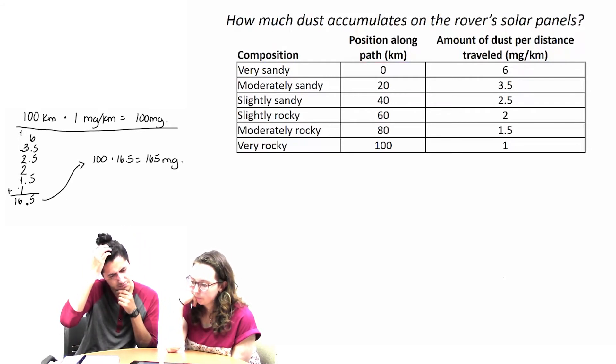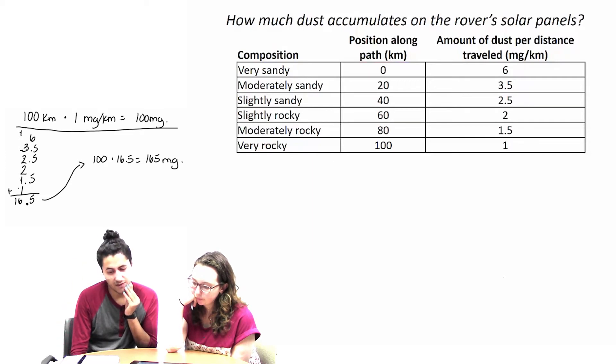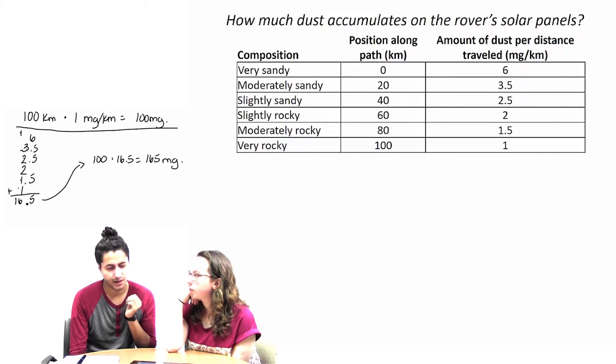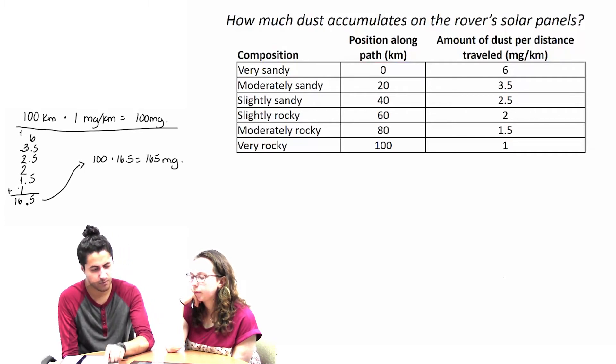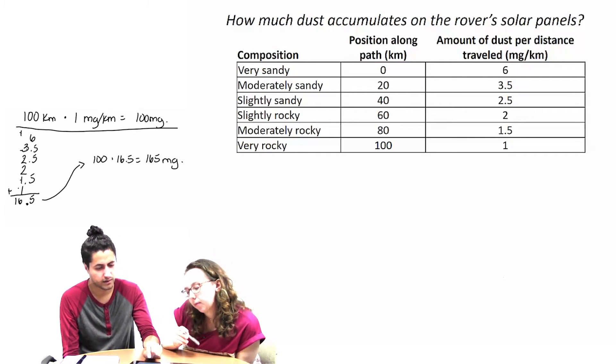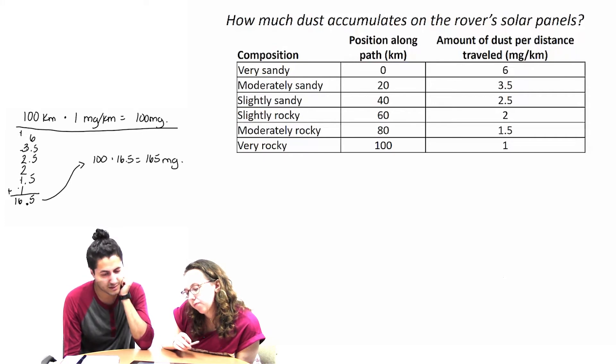But I feel like we're missing something. I feel like now we're saying that the rate of dust accumulating at 100 kilometers is 16.5. But here we have 1, and I don't know if that's consistent.